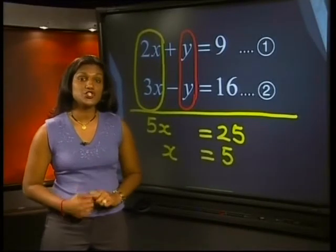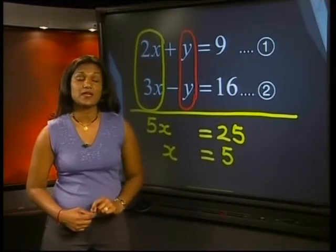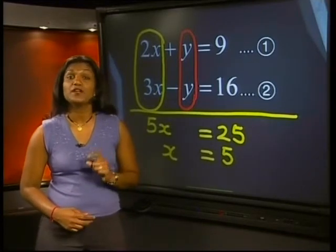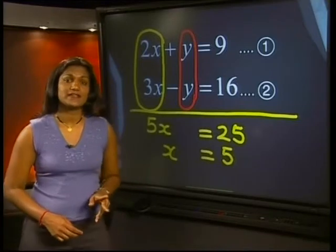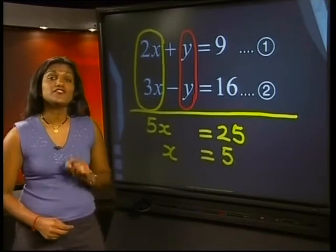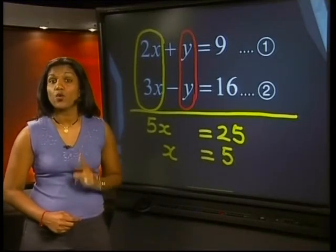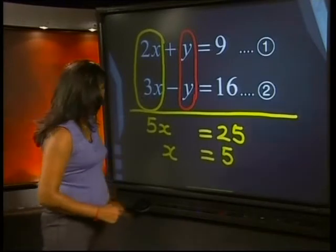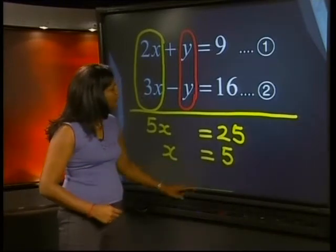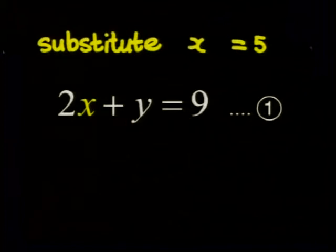Using the substitution method, we found exactly the same answer for x. It just took a bit longer to get there. So, what's next? Well, we need to find the value of the other unknown. Why? So, we need to substitute this value, x equals 5, into one of the two equations. I will use equation 1.